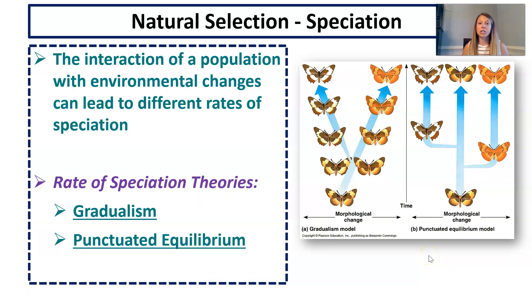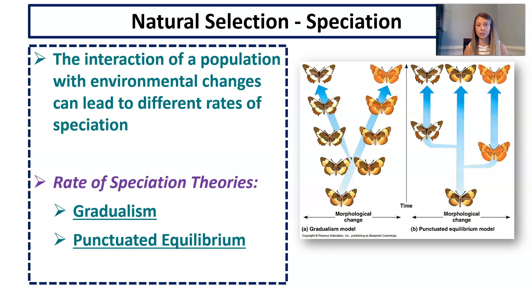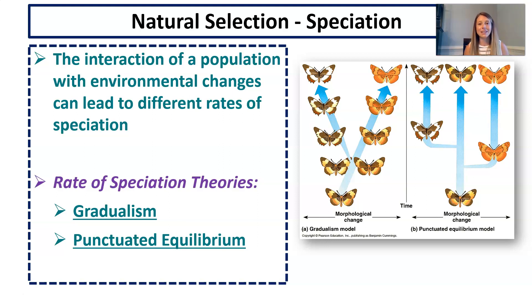Talking about speciation, there are two theories that explain the rate of speciation. The interaction of a population with its environment can lead to different rates. The two rate-of-speciation theories are called gradualism and punctuated equilibrium. It used to be that scientists were either team gradualism or team punctuated equilibrium, but now we realize that speciation is probably a combination of both happening at once.